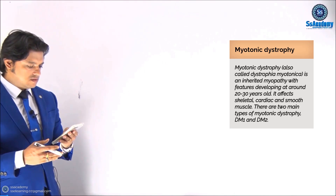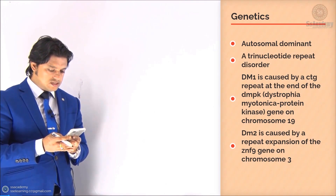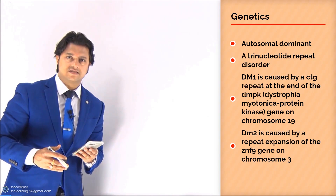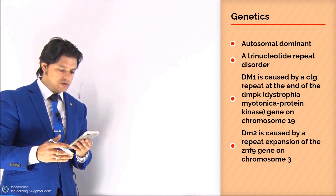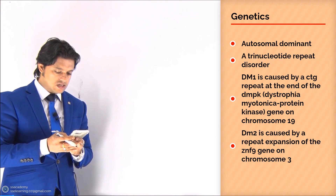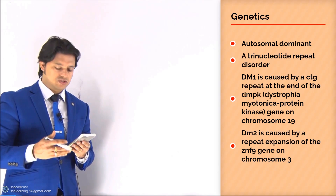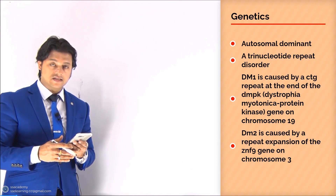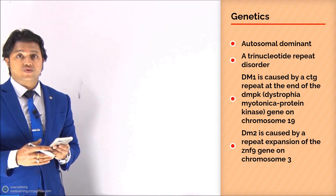There are two main types of myotonic dystrophy: DM1 and DM2. In genetics, it is an autosomal dominant trinucleotide repeat expansion disorder, which we call TRAPS. DM1 is caused by CTG repeat expansion at the end of the DMPK protein kinase gene on chromosome 19. And DM2 is caused by repeat expansion of ZNF9 on chromosome number 3.